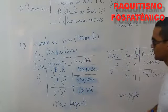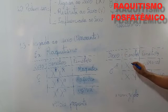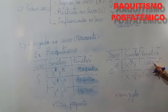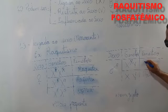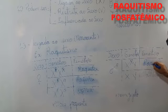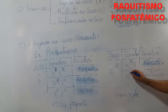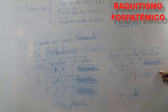Agora o homem. O homem, ele sendo X com alelo dominante R, ele é raquítico. E ele sendo X com alelo recessivo r, ele é homem normal.